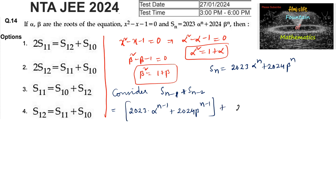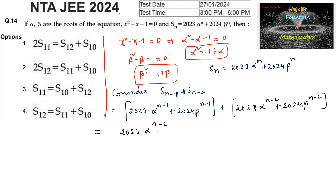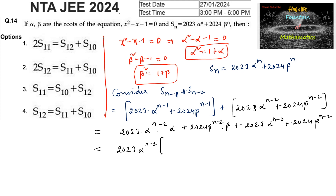We can write 2023 times alpha to the power of n minus 2 plus 2024 times beta to the power of n minus 2. On simplifying, 2023 times alpha to the power n minus 2 into alpha, plus 2024 times beta to the power n minus 2 into beta, plus 2023 times alpha to the power n minus 2. We can take 2023 times alpha to the power of n minus 2 common.